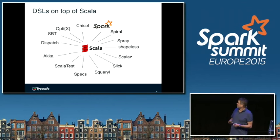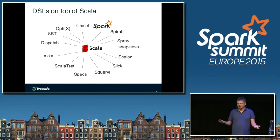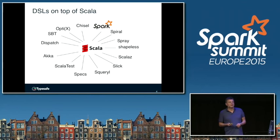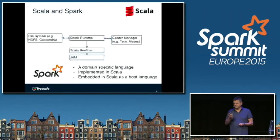A series of them came out of Stanford — the OptiX series of languages for staging. And then you can also think of SBT, the Scala build tool, as a domain-specific language. Spiral, essentially for program generation of very fast algorithms, is another DSL running on top of Scala. Of course today we're going to talk about Spark, which is in a sense the most widespread and most successful of all the DSLs.